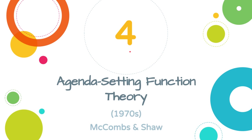Hello and welcome to the fourth video in the series that looks at the important media communications theories that try to explain how the media influences people. This video specifically looks at the agenda setting function theory, which rose in prominence in the 1970s, and key figures in this theory were McCombs and Shaw.